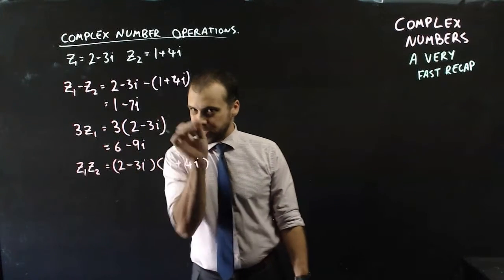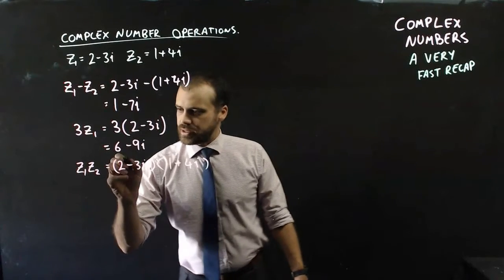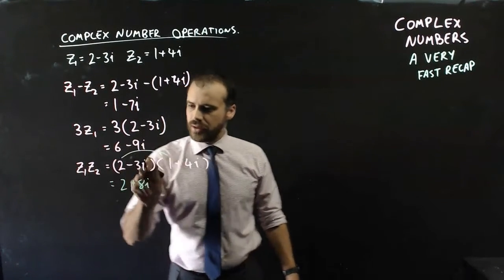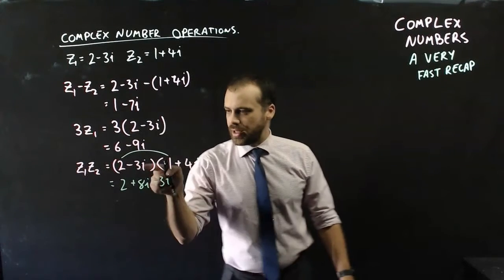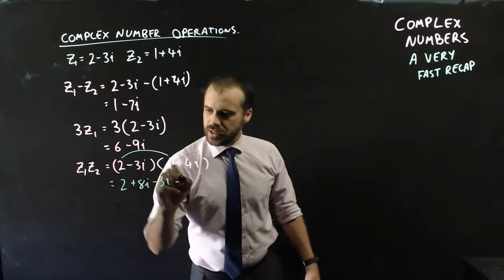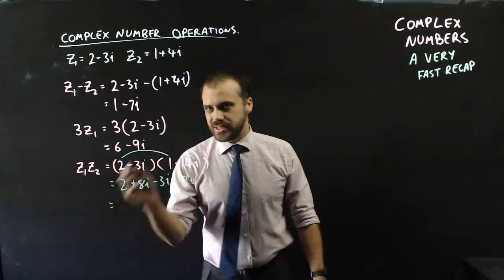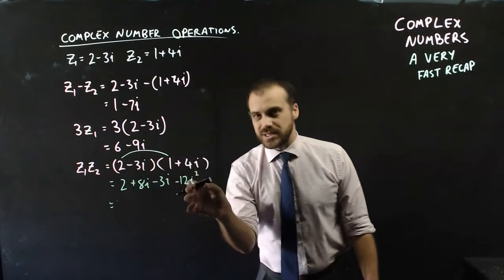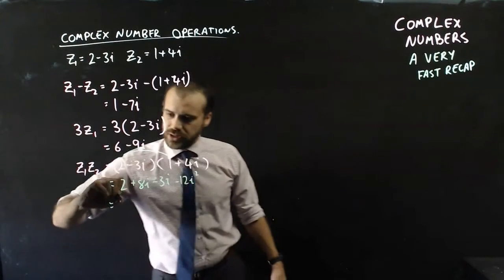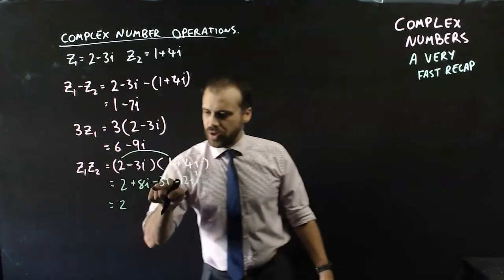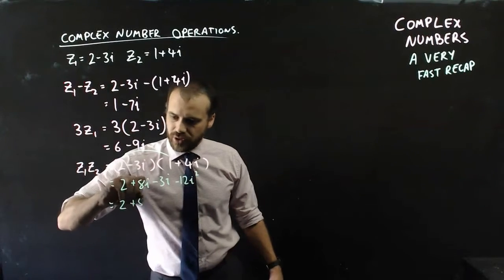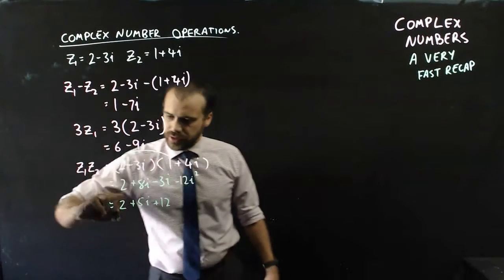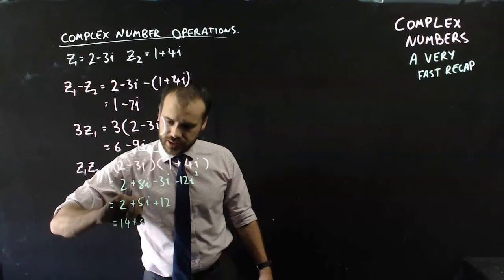Multiplying two complex numbers together works exactly how you would expect. It's this times this, which is 2, that times that, which is 8i, that times that, which is negative 3i, and then this times this, which is negative 12i squared. But then something strange happens. i squared is the same as negative 1, which means that's negative 12 times negative 1, which makes it positive 12. So we get 2, 8i minus 3i is 5i. That's now positive 12. And now I can bring those two together and get 14 plus 5i.